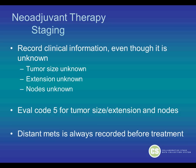For the staging of this case, you would record the clinical information even though it is unknown, because that was the worst scenario. You would record tumor size as unknown, extension as unknown, and lymph nodes as unknown. The eval code is 5 for the tumor size, extension, and lymph nodes. Distant metastasis is always recorded before the treatment.